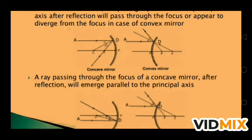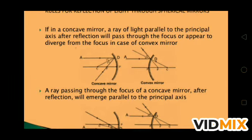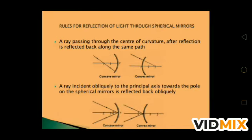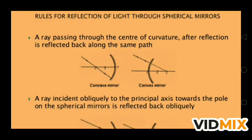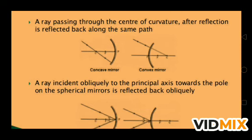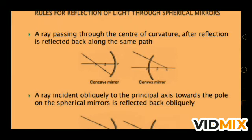Second rule: a ray passing through the focus of a concave mirror after reflection will emerge parallel to the principal axis. As seen in the diagram, light coming from the focus after striking the mirror becomes parallel to the principal axis. Third rule: a ray passing through the center of curvature — as seen in the diagram, it strikes the mirror and retraces the same path. So a ray passing through the center of curvature after reflection is reflected back along the same path.